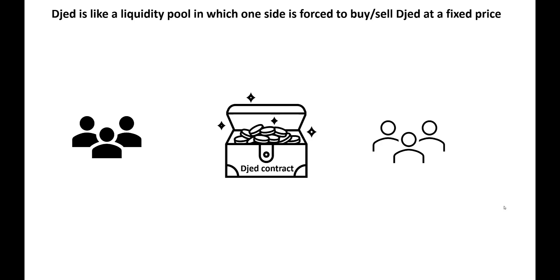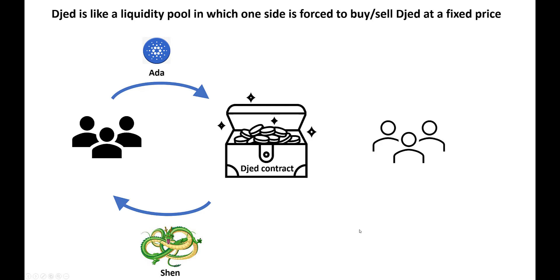Djed is a stablecoin, but let's start with how this contract is initially funded. Liquidity providers on the left hand side throw ADA into the Djed contract and in return they get back a Shen token. Shen represents a claim on a portion of what's in the Djed contract — a bit like being a shareholder. The more Shen tokens that are issued, i.e. the more liquidity providers come in, the more the value of your individual Shen token is diluted, giving you a smaller share of the Djed pie.